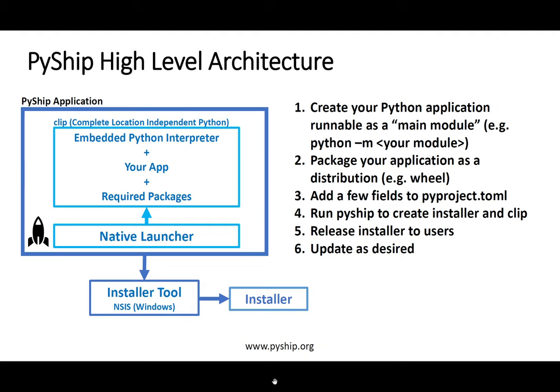Your application can also update itself in the background. The CLIP file, which is a zip of the CLIP directory, is versioned and also uploaded to the cloud. PyShip provides an update capability that downloads new versions, and those versions are used when your application restarts. This can be done without any user intervention, since the launcher app can restart your application as part of this process. For many applications, such as Taskbar apps, this requires no end user intervention.